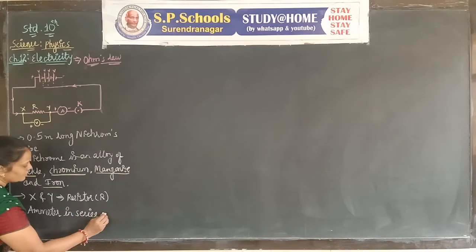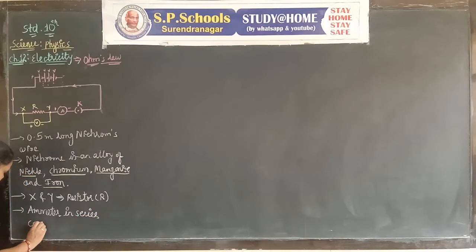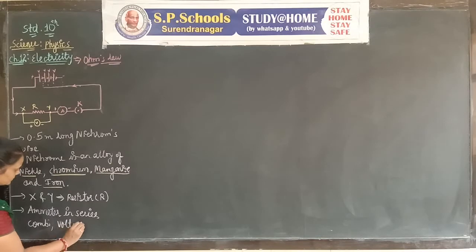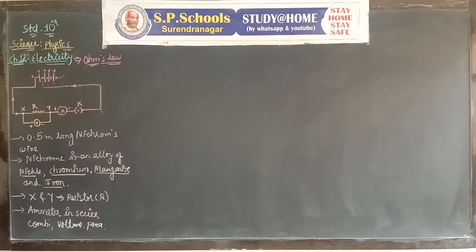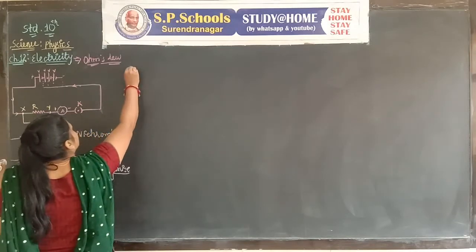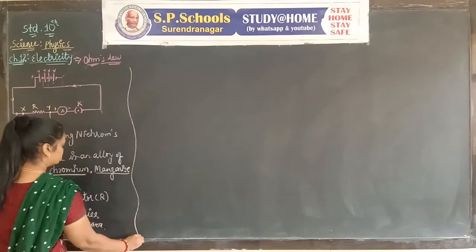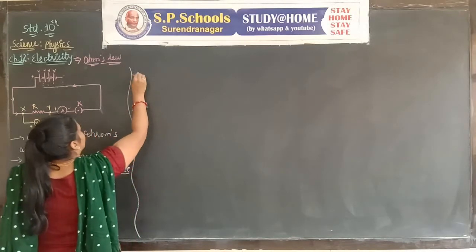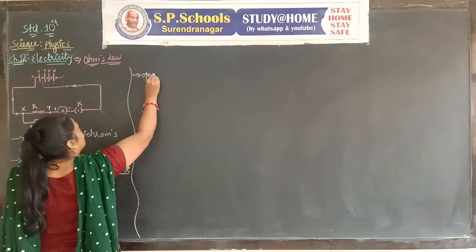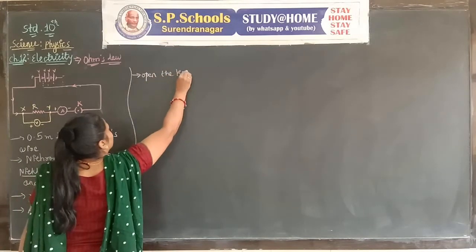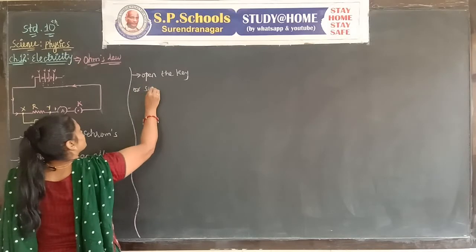We connect the ammeter in series combination and the voltmeter in parallel combination. First we open the plug key or switch on.